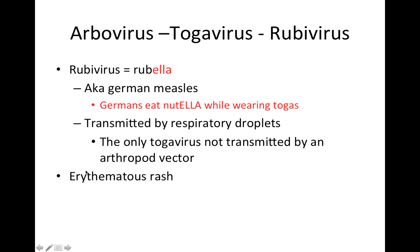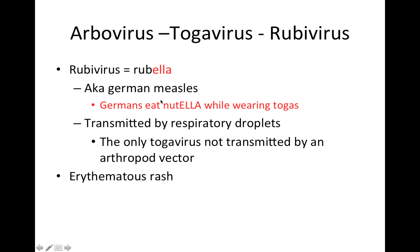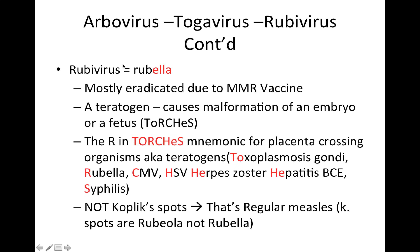The main symptom is an erythematous rash, whereas with rubella it's Koplik spots. Rubivirus — rubella — is mostly eradicated due to the MMR vaccine: the measles, mumps, rubella vaccine.